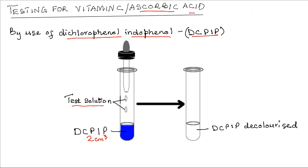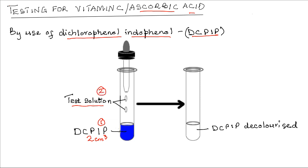Remember, in this test the first step is to place the DCPIP in the test tube. Then we add the test solution drop by drop, shaking well after each drop.